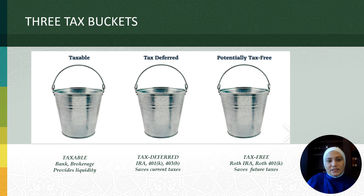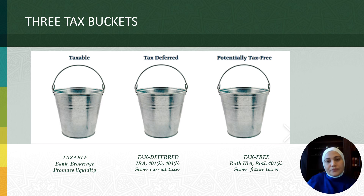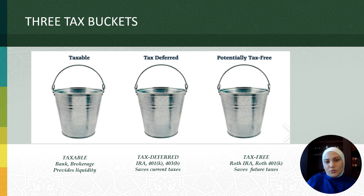Each year, you get a 1099 form to report the growth or loss in your account. The second tax bucket, or the tax-deferred bucket, is the Tax Me Later bucket. This bucket holds accounts like Traditional IRA, 401k, and SEP IRA. These accounts are funded with pre-tax money, meaning that you get to contribute without paying taxes on that money right now. You get an immediate tax advantage and do not need to claim the contribution as income in the current year.